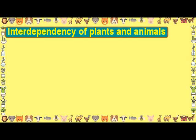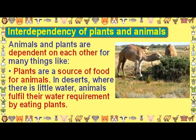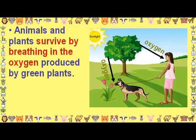Interdependency of plants and animals: animals and plants are dependent on each other for many things. Plants are a source of food for animals. In deserts where there is little water, animals fulfill their water requirement by eating plants. Animals and plants also survive by breathing in the oxygen produced by green plants.